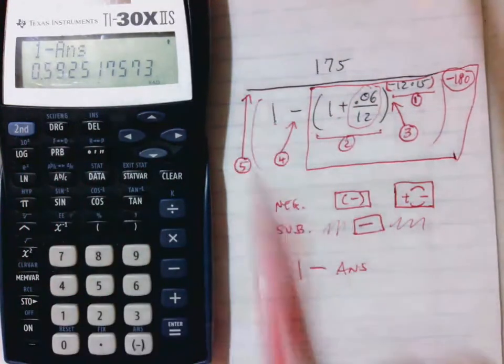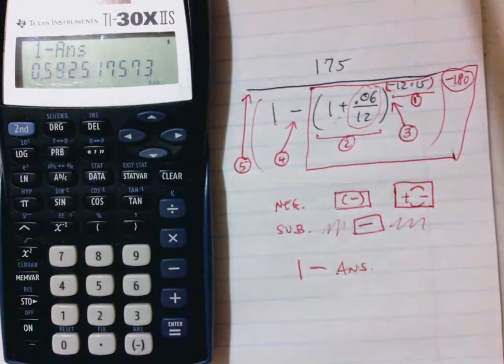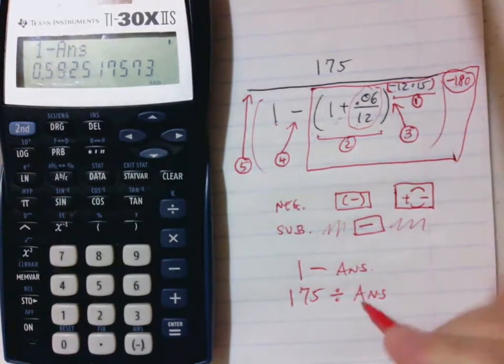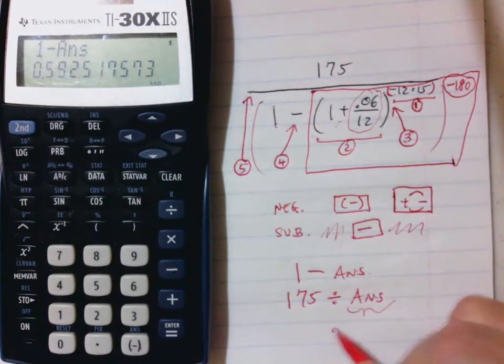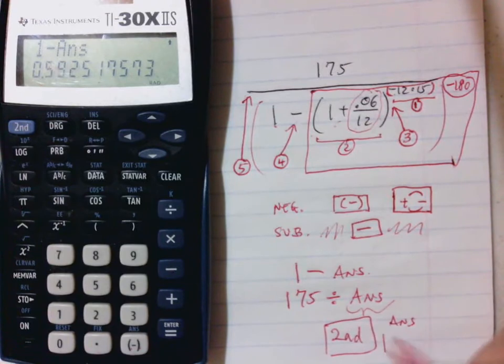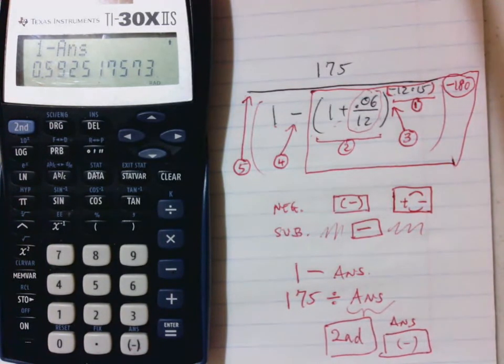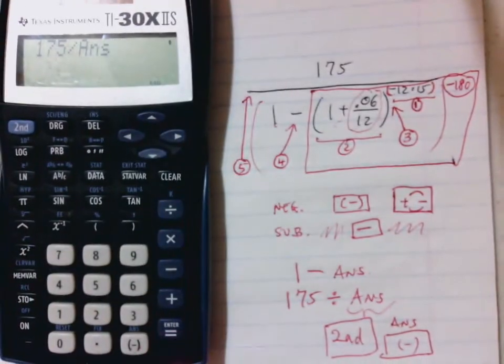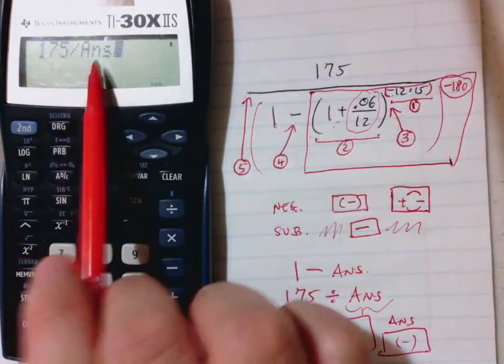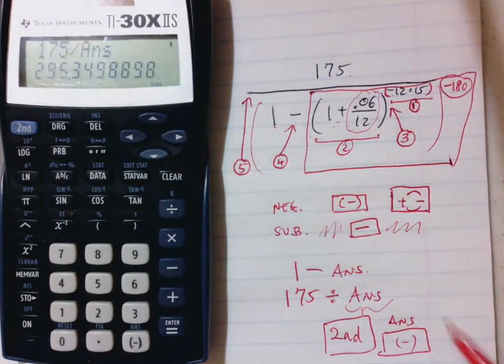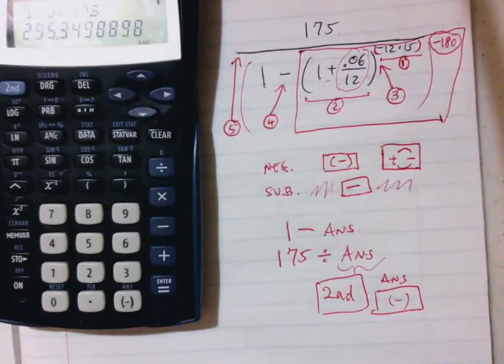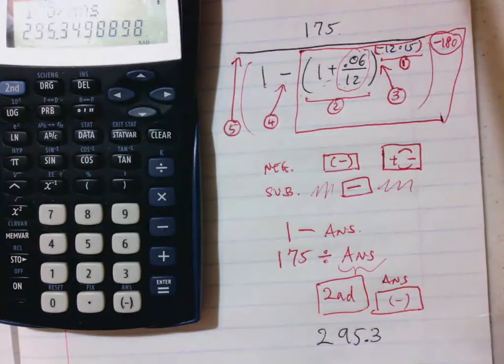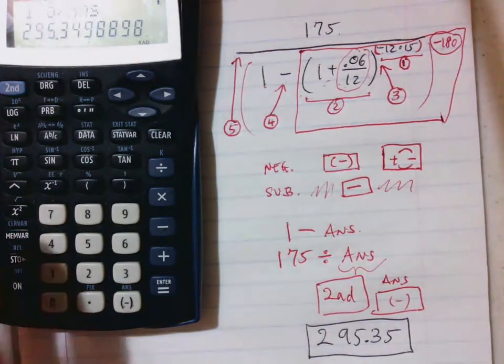All of this is all of the denominator. I still need 175 divided by the denominator. So I go 175 divided by the answer, which in terms of keystroke is second and then answer above the negative key. So 175 divided by second answer. So on the screen, it shows 175 divided by the previous answer, which is what I want. And so the final result is 295.349, which rounds to 35. All right. Hope that helps.